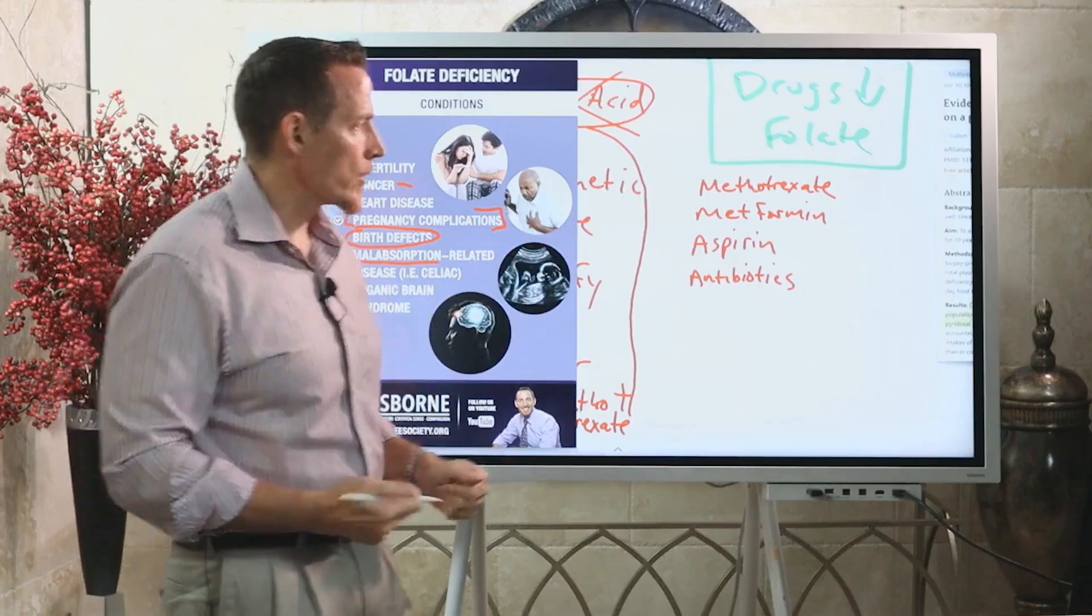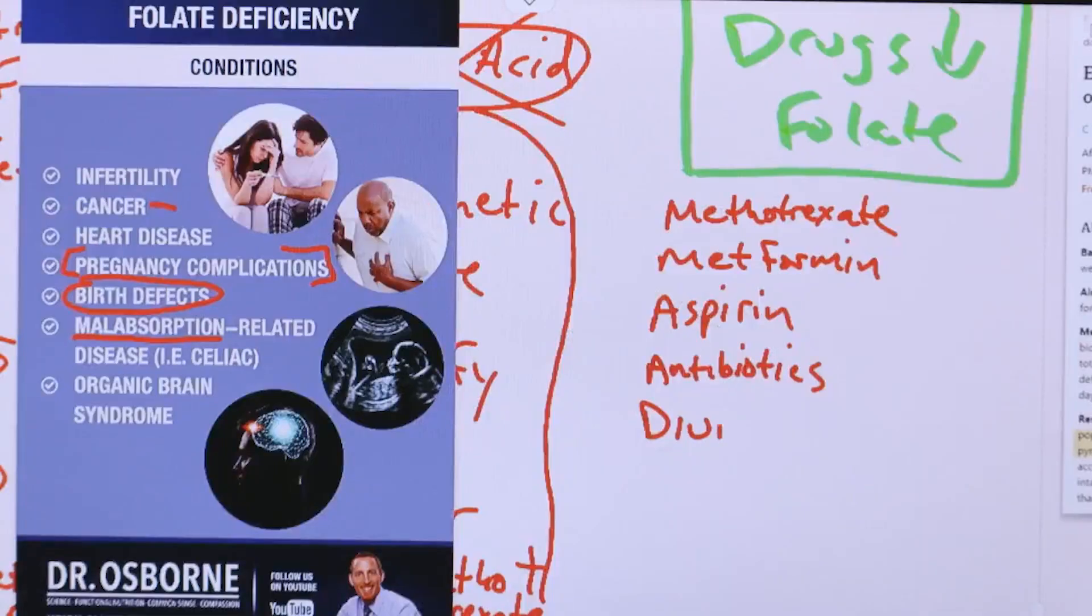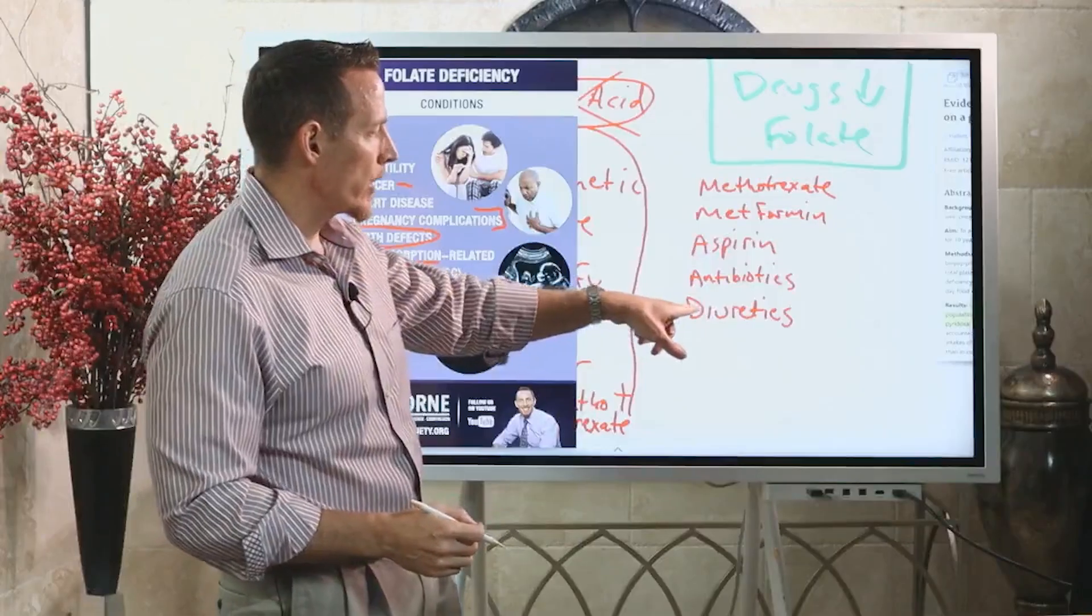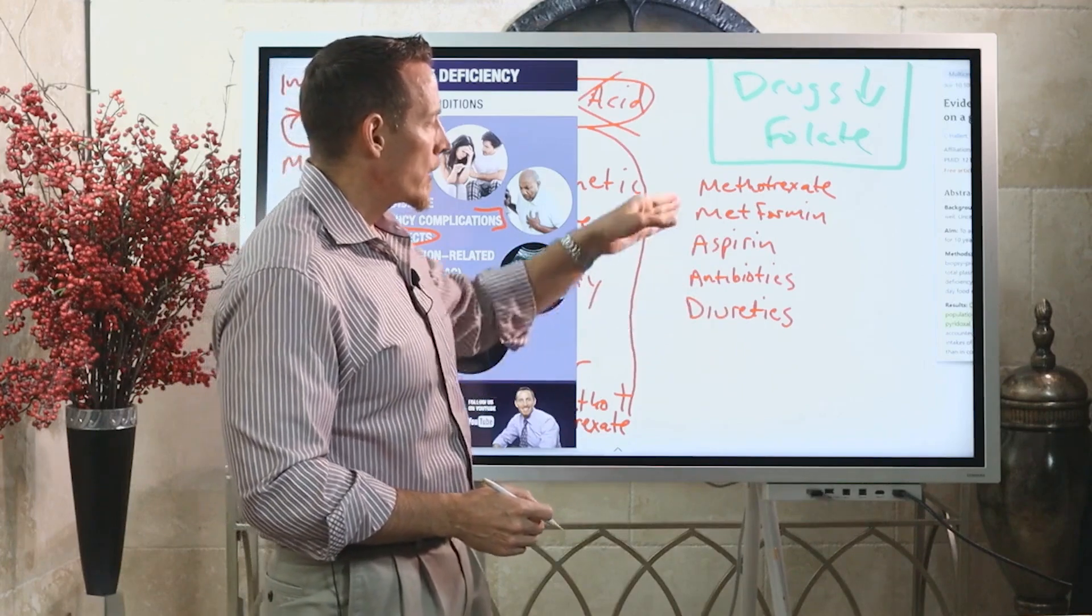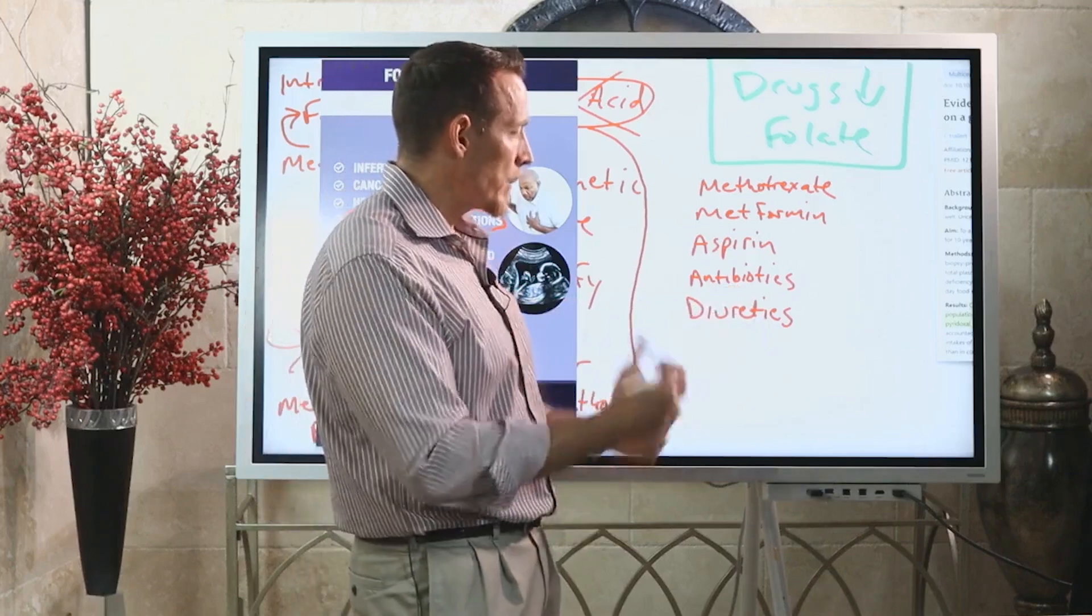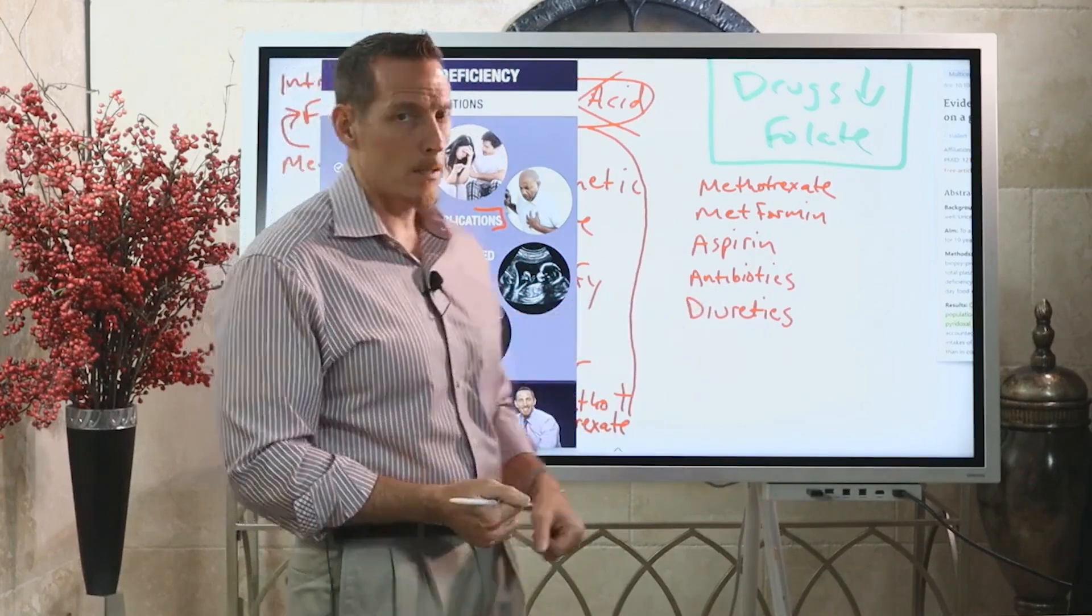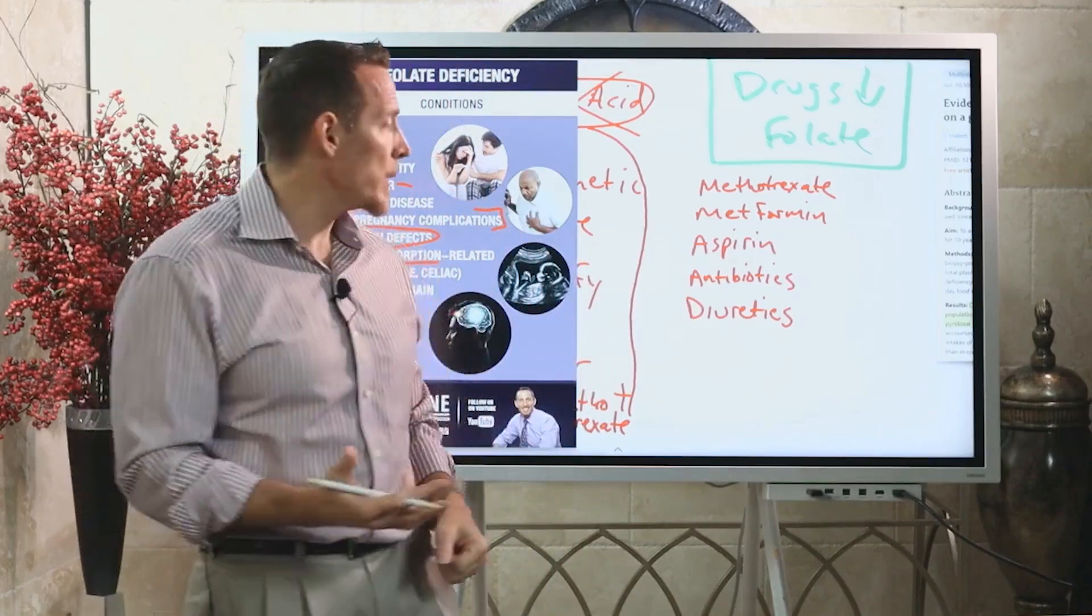We can add diuretics to this list. Most commonly, diuretics are prescribed to lower blood pressure. If you're diabetic and you have high blood pressure and you're on a diuretic and you're on metformin, this is kind of a double hit. The diuretics don't just deplete folate, they can deplete other B vitamins as well. Remember too that excessive caffeine use would classify as a diuretic.